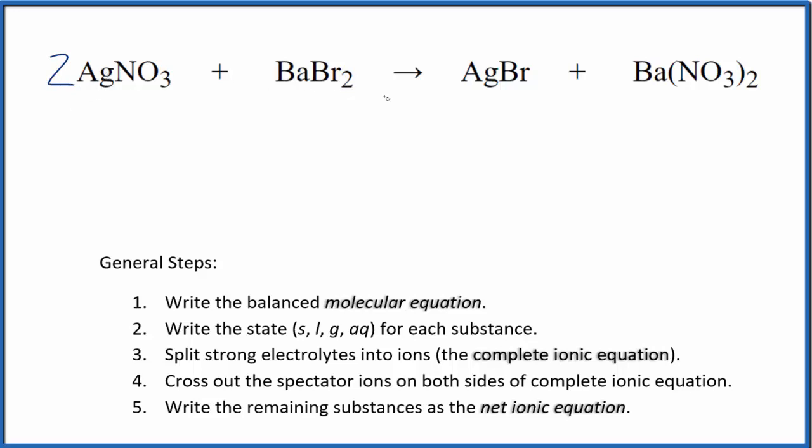Now there are two silver atoms, so let's put a two in front of the silver bromide to balance the silver. Two bromines, two bromines here. Barium, barium - we're done. This is the balanced molecular equation. Now we can write the state for each substance.